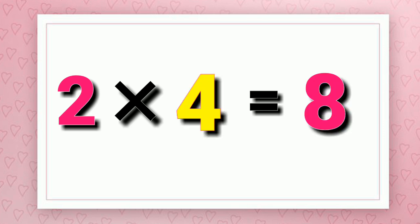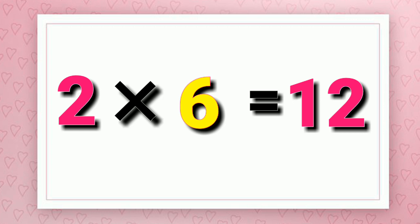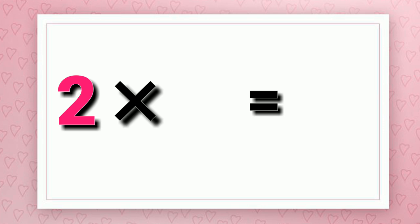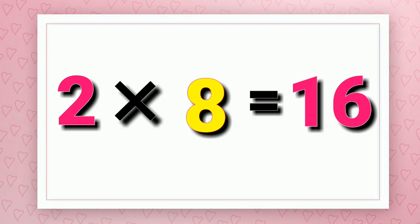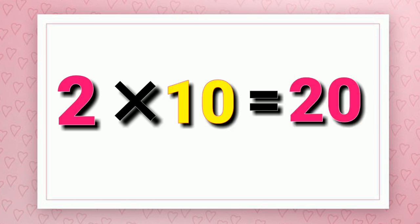Two fives are ten. Two sixes are twelve. Two sevens are fourteen. Two eights are sixteen. Two nines are eighteen. Two nines are twenty.